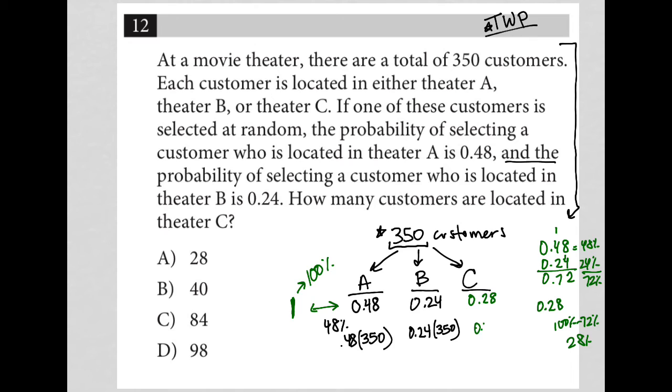So then I could take that 0.28 and multiply by 350, and let's see what I get. So go to my calculator, 0.28 times 350 is equal to 98. So there are 98 customers in theater C, and choice D is the correct answer.